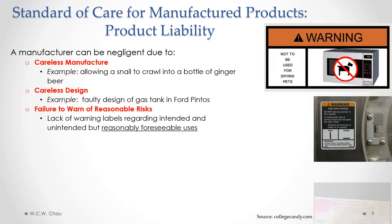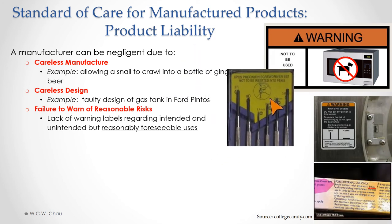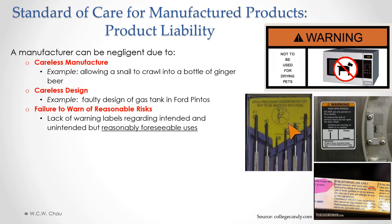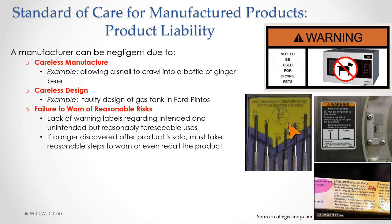Here are some examples of real warning labels — some warnings cover intended uses, some unintended ones, and whether they are reasonably foreseeable is debatable. Once a product is on the market, if a danger arises from an unforeseen use and the manufacturer becomes aware of it, they have an obligation to take reasonable steps to warn consumers of that danger or even recall the product altogether.